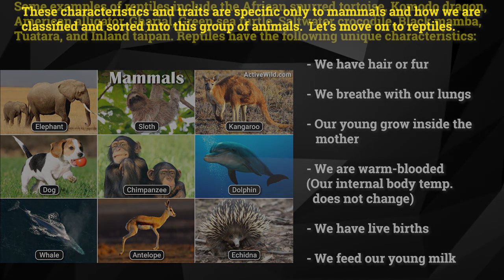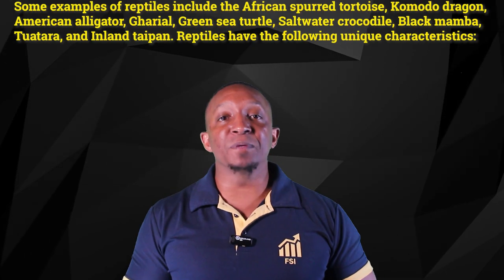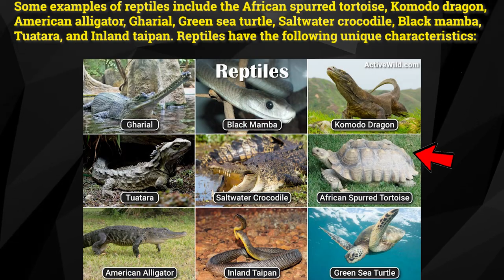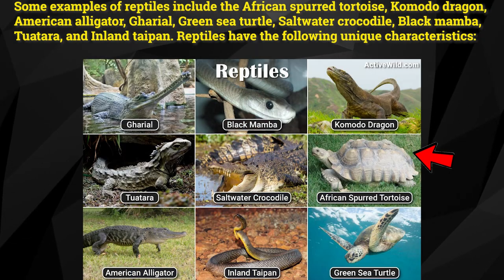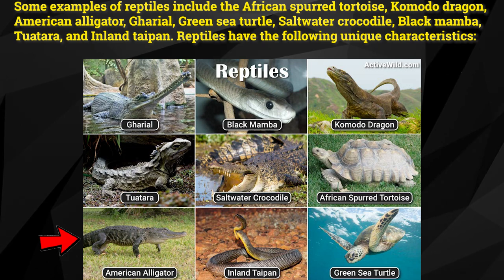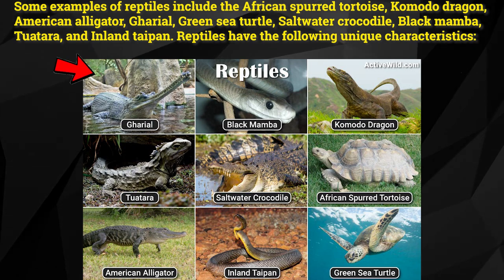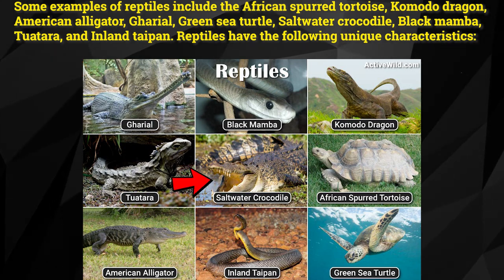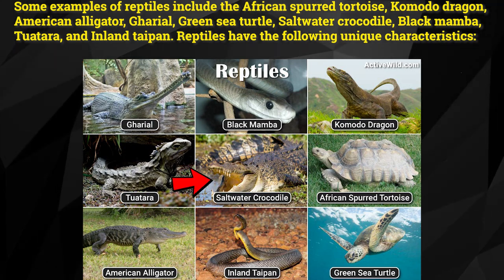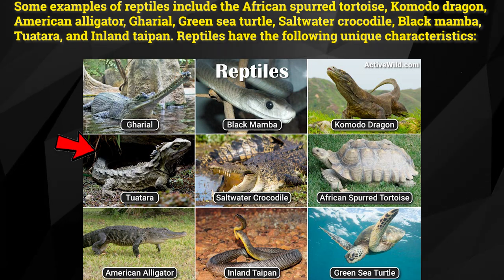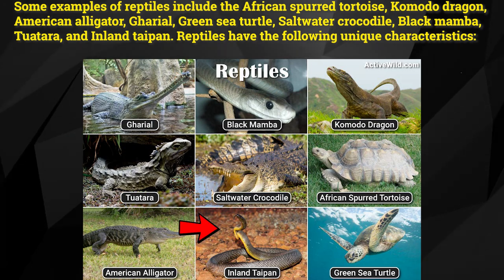Let's move on to reptiles. Some examples of reptiles include the African spurred tortoise, Komodo dragon, American alligator, gharial, green sea turtle, saltwater crocodile, black mamba, tuatara, and inland taipan.